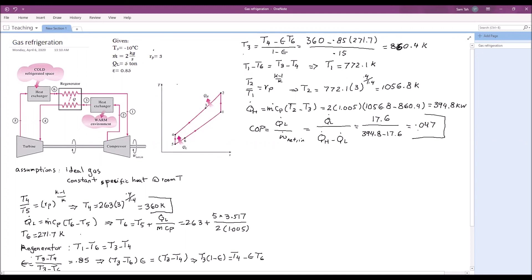So the COP of gas refrigeration cycle is actually quite low compared to the vapor compression refrigeration cycle. This is not an optimized cycle system, actually. You can change some of the variables, maybe pressure ratio, mass flow rate, to get a better optimized cycle for 5 ton of refrigeration now that you know how to do the calculation.